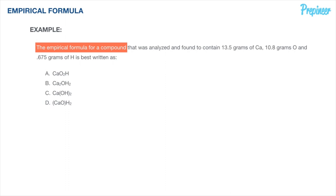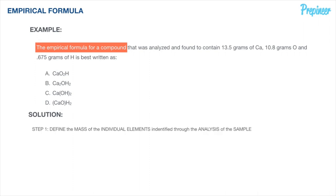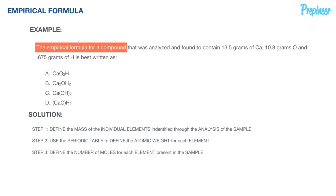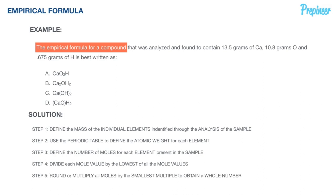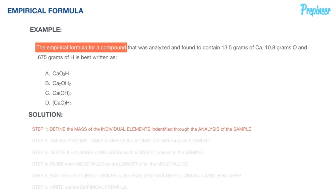Let's reiterate our solution track. Step 1: define the mass of the individual elements identified through the analysis. Step 2: use the periodic table to define the atomic weight for each element. Step 3: define the number of moles for each element. Step 4: divide each mole value by the lowest mole value. Step 5: round or multiply all moles by the smallest multiple to obtain a whole number. Step 6: write out the empirical formula.